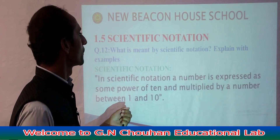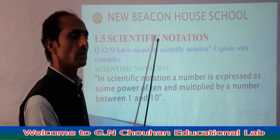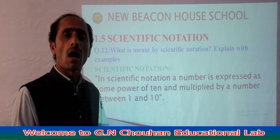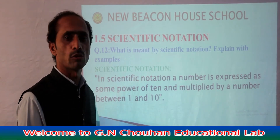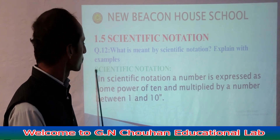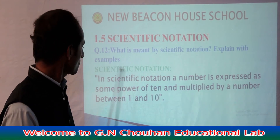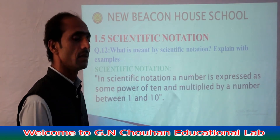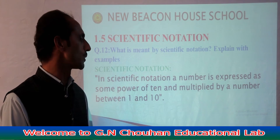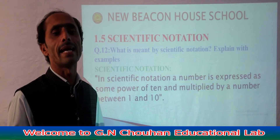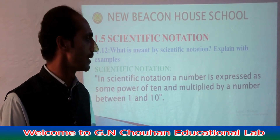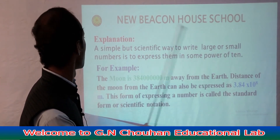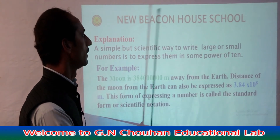What is meant by scientific notation? In scientific notation, a number is expressed as some power of 10 multiplied by a number between 1 and 10. A simple but scientific way to write large or small numbers is to express them in some power of 10.